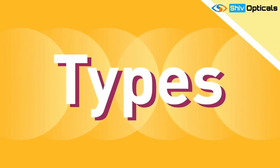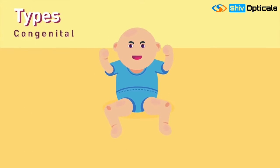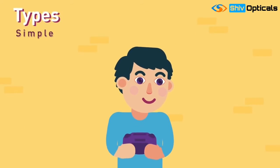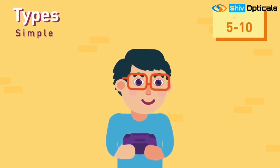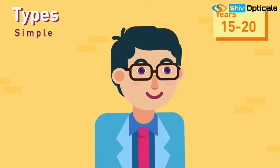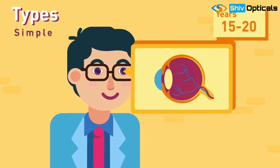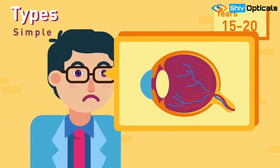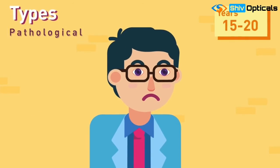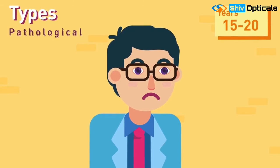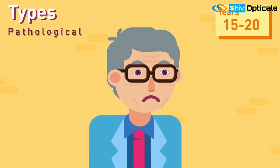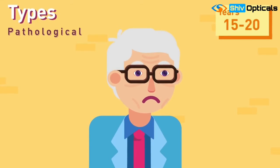Types. Congenital: from birth. Simple: the most common type, starts from 5 to 10 years till 15 to 20 years, and is mostly due to curvature or length problem of the eyeball. Pathological: hereditary, progressive, and is due to degenerative changes in the eyes.